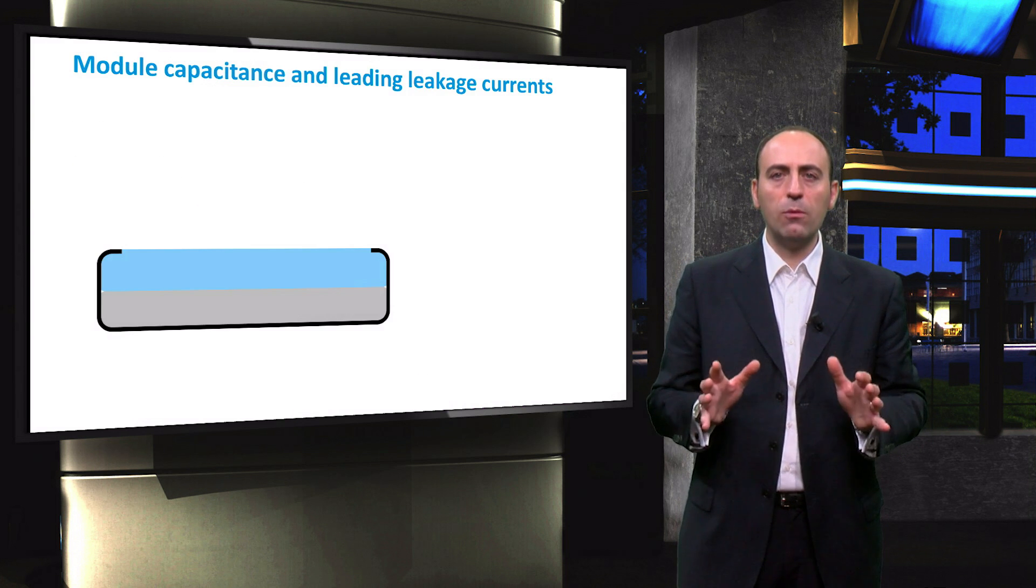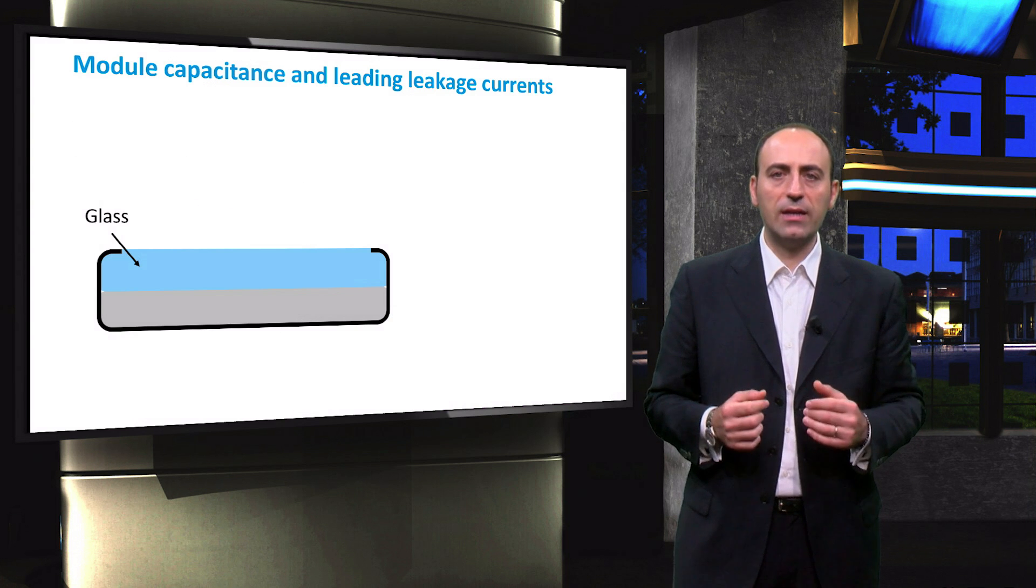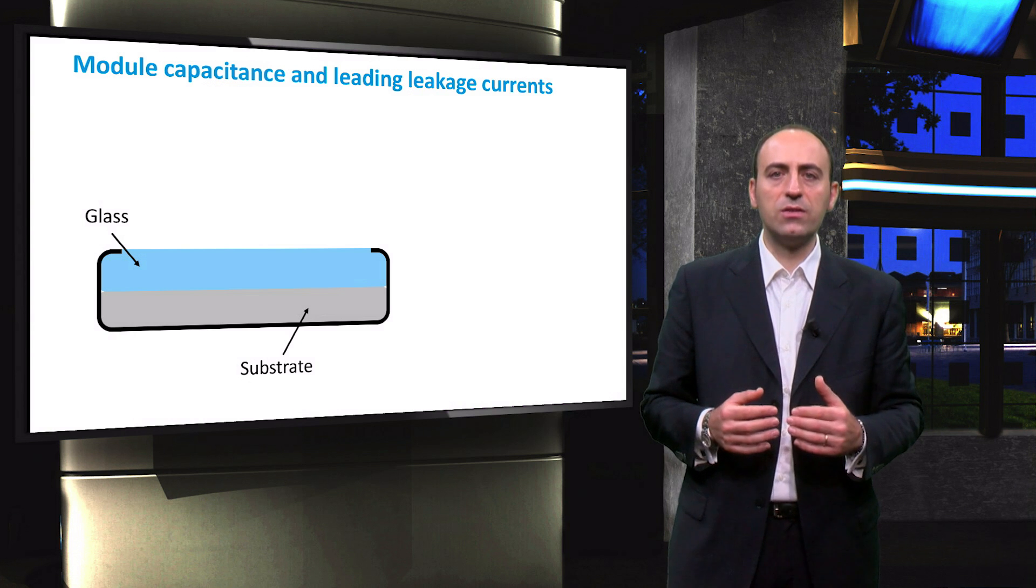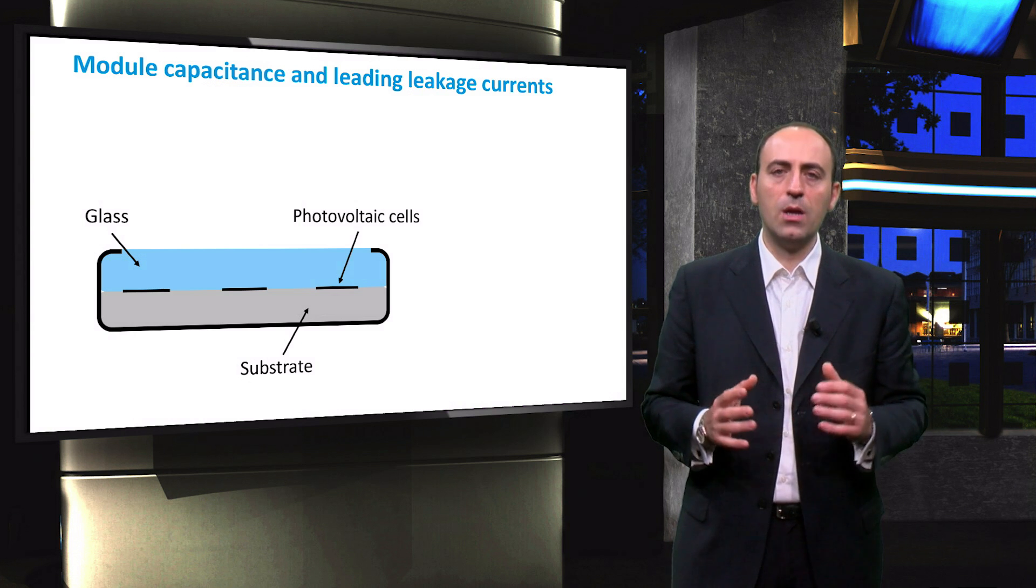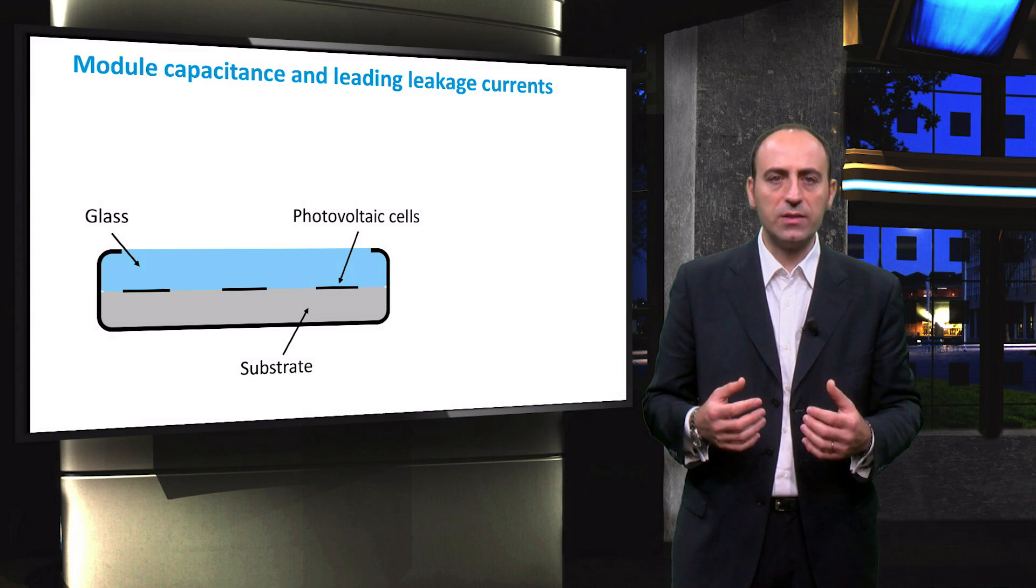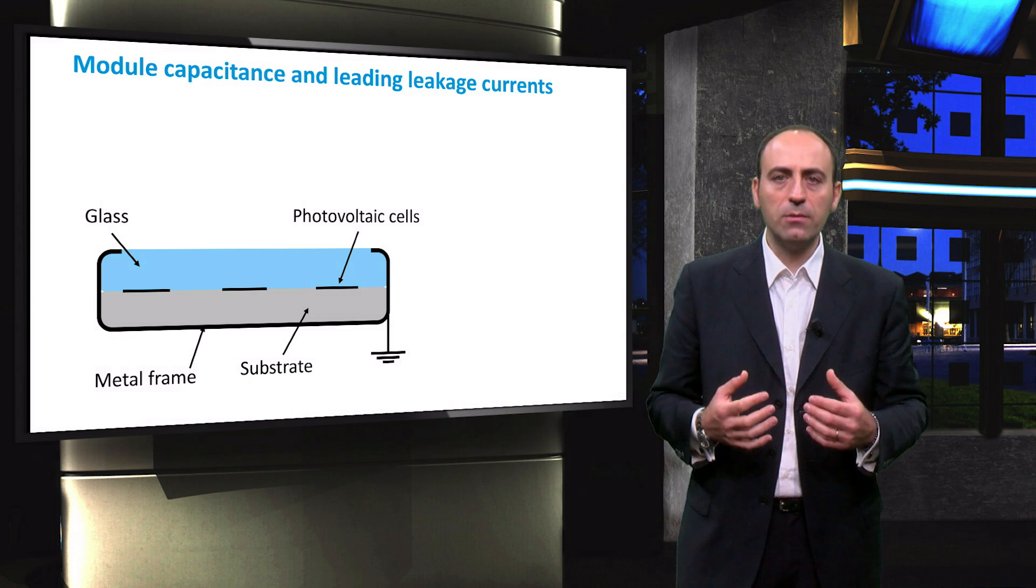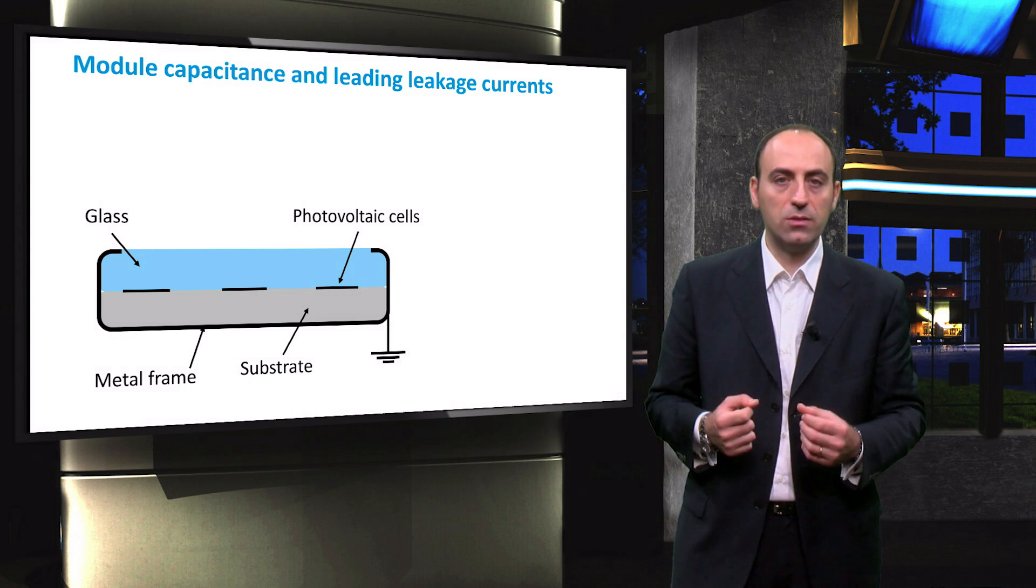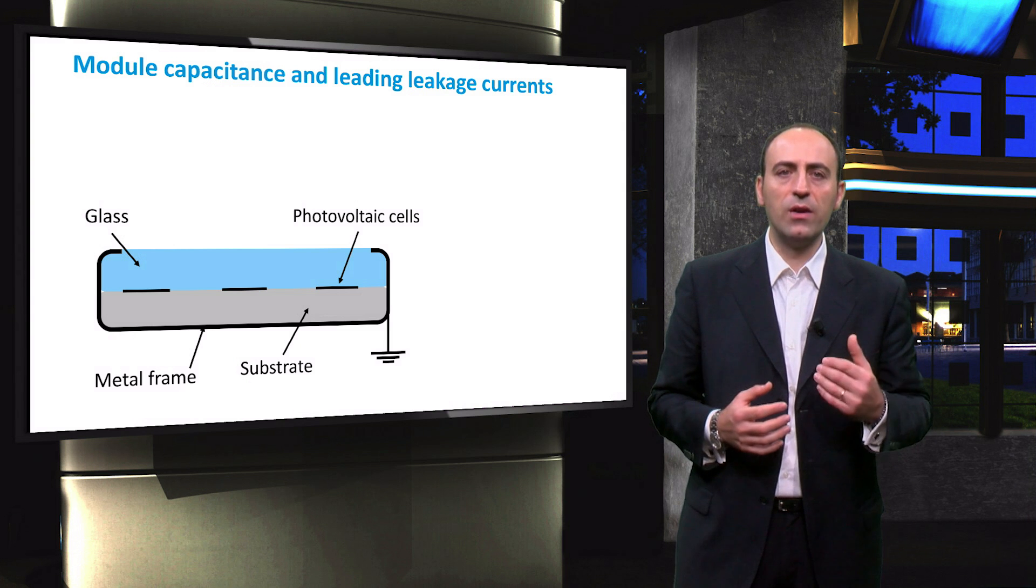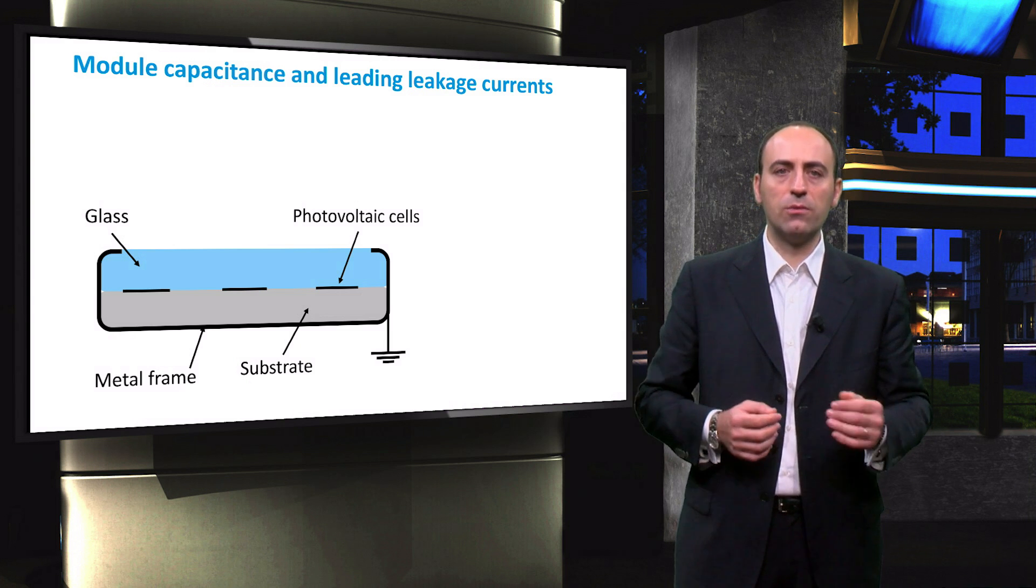A PV module is formed by different layers. A glass layer is on the top part and it lays on a substrate, and the photovoltaic cells are situated between these two levels. The PV module generates an electrically chargeable surface area, which is next to a grounded metal frame. Such an arrangement behaves as an electrical capacitor, whose capacitance is greater the larger the surface area and the smaller the distance from the grounded frame.